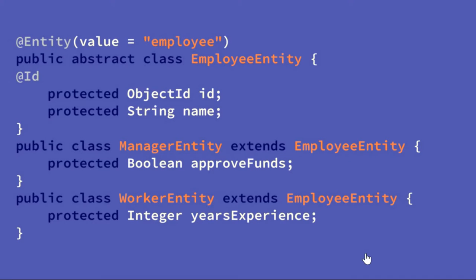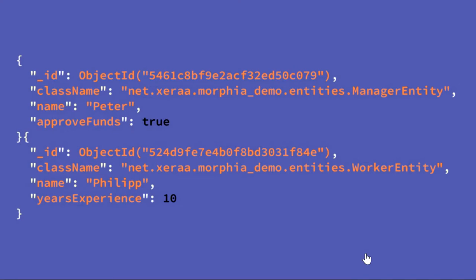How do document stores solve this? Using Morphia — an Object Document Mapper (ODM) for MongoDB — the annotations should be familiar. You just annotate the abstract base class with an entity and have your specific implementations. When you insert one manager and one worker, you just have JSON — no joins, no unions, no null attributes. You just have plain JSON documents you want to store, and you can store them in the database. This works pretty nicely for document stores.